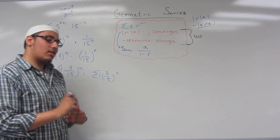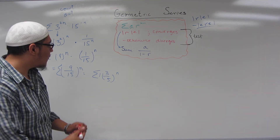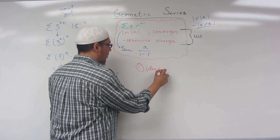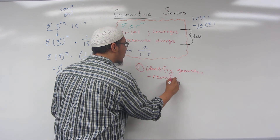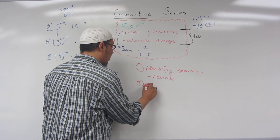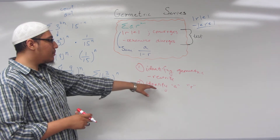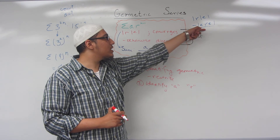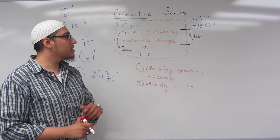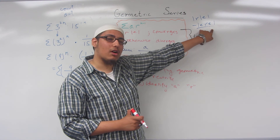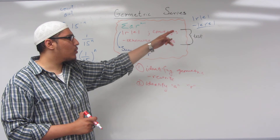That was our last example. Let's talk about the steps. The first step for geometric series: identify if it's geometric — rewrite if necessary. Number two: identify your A and R terms. Once you have identified A and R, check if R fits the interval between negative 1 and 1. If it does, the series converges; if not, it diverges. Keep in mind that 1 and negative 1 are not included — it's strictly less than or greater than, not less than or equal to.